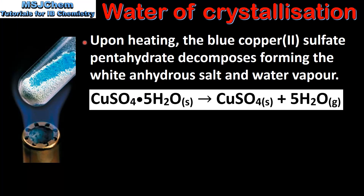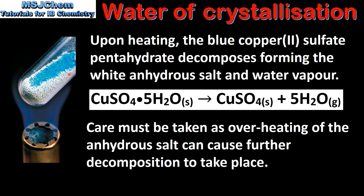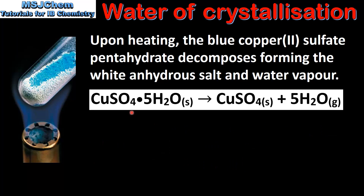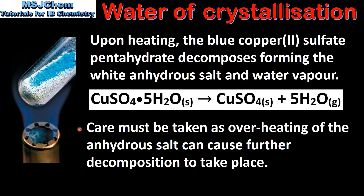Upon heating, the blue copper sulfate pentahydrate decomposes forming the white anhydrous salt and water vapor. We can see the blue hydrated salt being heated forming the white anhydrous salt. Here we have the equation for the decomposition of copper sulfate pentahydrate into the anhydrous salt and water vapor. Care must be taken as overheating of the anhydrous salt can cause further decomposition to take place.